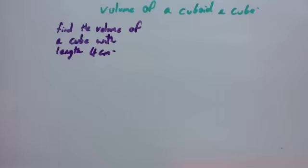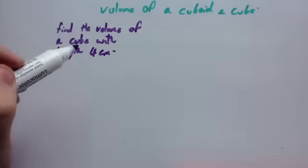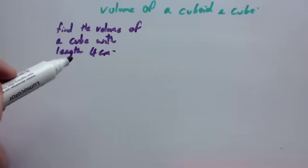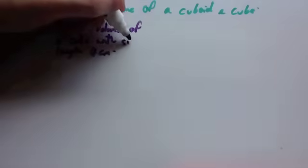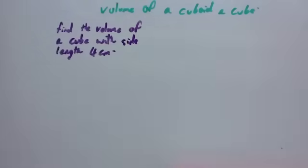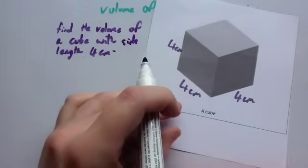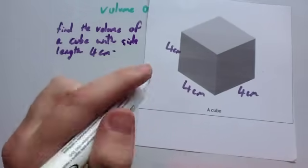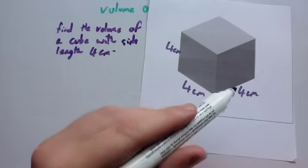This time we're going to find the volume of a cube. Find the volume of a cube with length 4cm. Notice it only mentions one side length, 4cm. That's because in a cube, all the sides are the same length. Here's a picture of a cube with a side length of 4cm, so all the sides are 4cm.